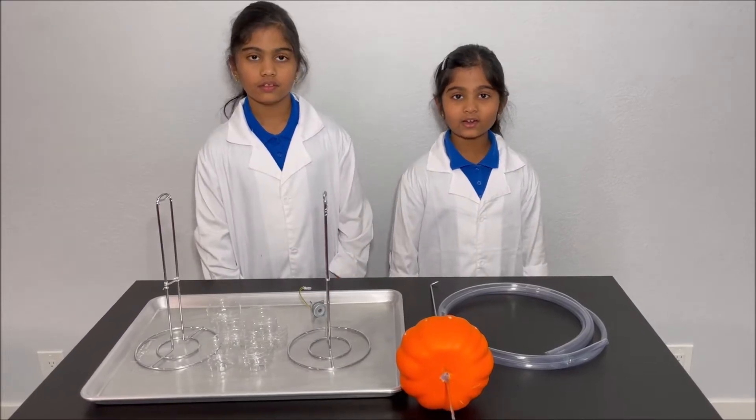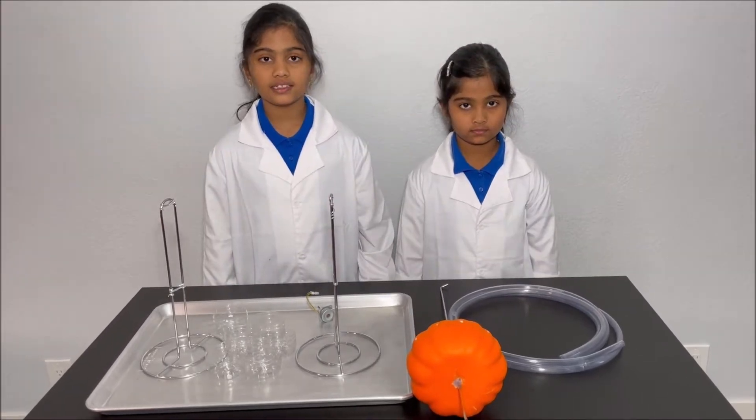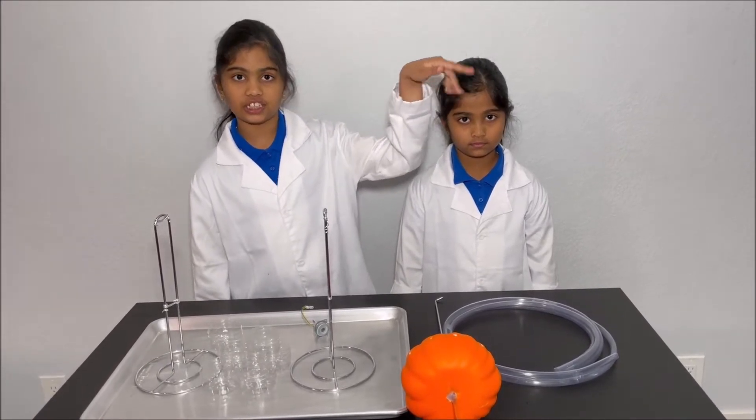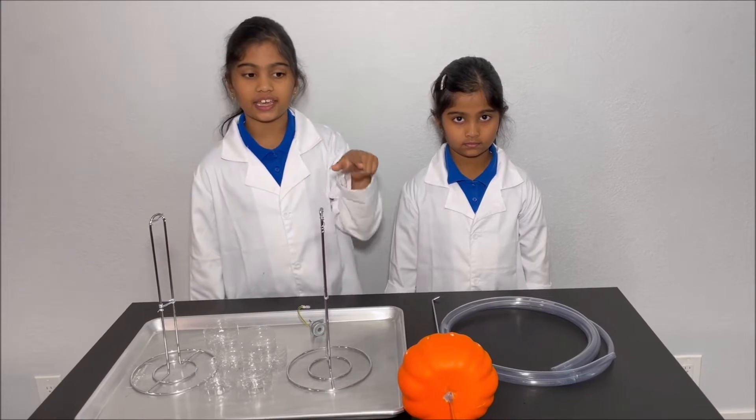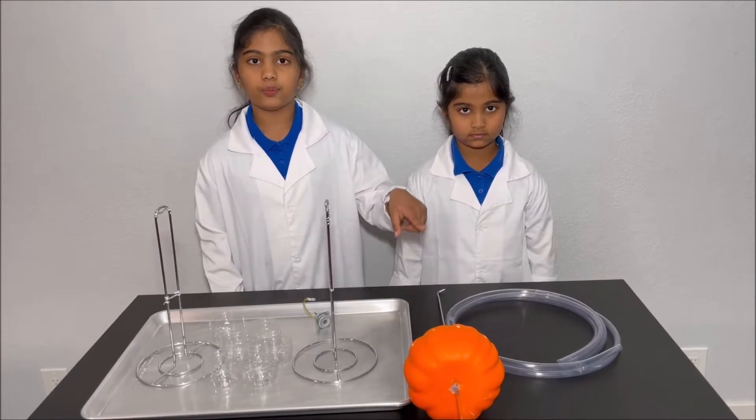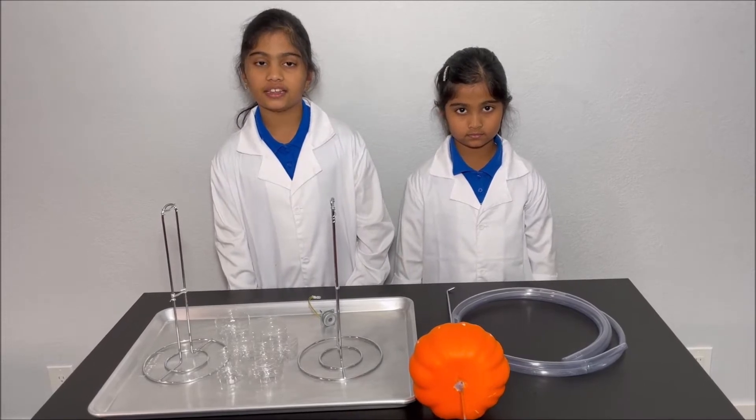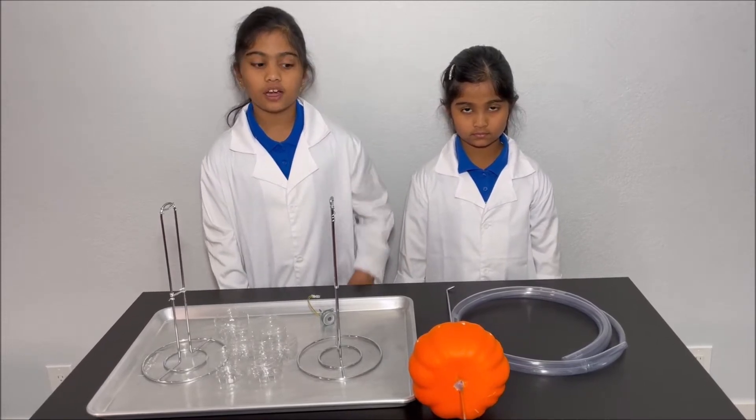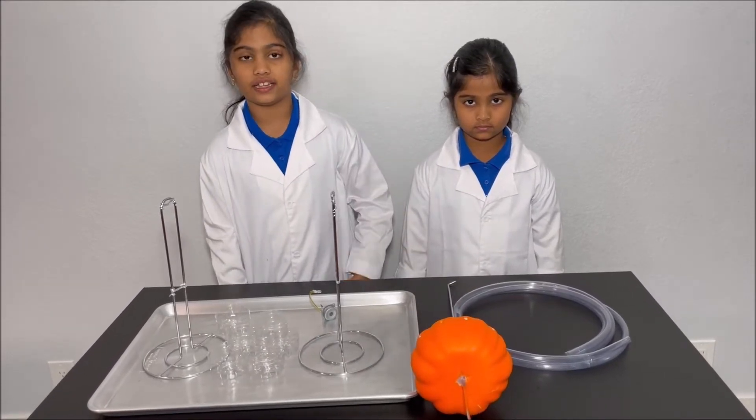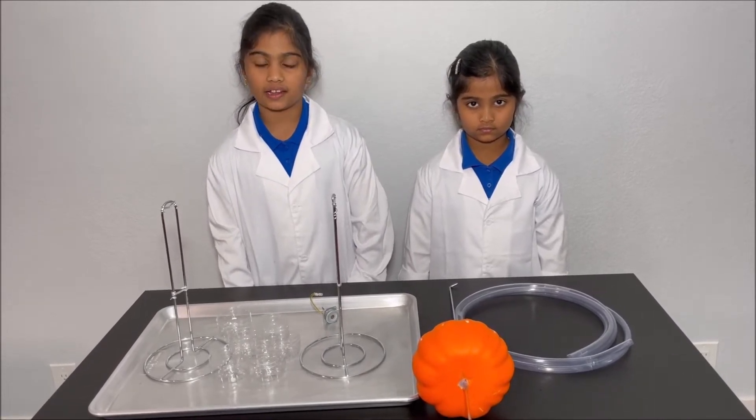Please have an adult next to you while you do this experiment for your safety. Electricity is generated when water falls from a high potential energy, turns into kinetic energy, and goes to a lower potential energy. That water spins a water wheel, and that water wheel spins a generator. The generator generates electricity by taking in the mechanical energy from the water wheel and converting that mechanical energy into electricity, and that's how we get electricity in our homes.